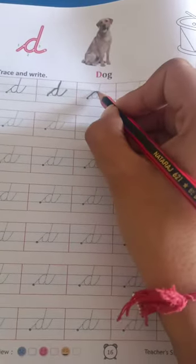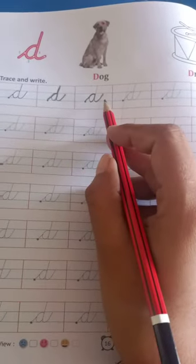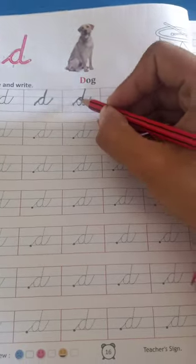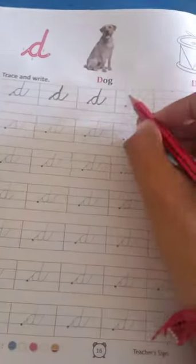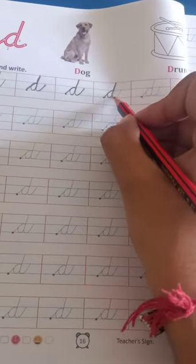D, देखो. A. यह A ही बनाया न हमारा? अब हम इस A का जो dot है न, उस mark को हम upward ले जाएंगे. That is D. Like this. D as dog. Speak with me. D as dog.